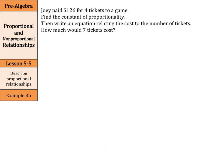Joey paid $126 for four tickets to a game. Find the constant of proportionality. Then, write an equation relating the cost to the number of tickets. How much would seven tickets cost? Let's set our variables. C could equal, again, our total cost, whereas T can be our number of tickets.